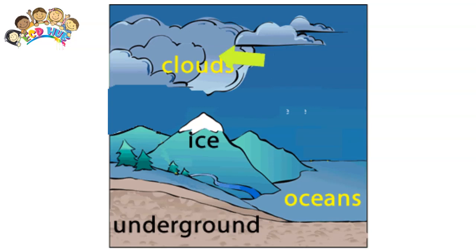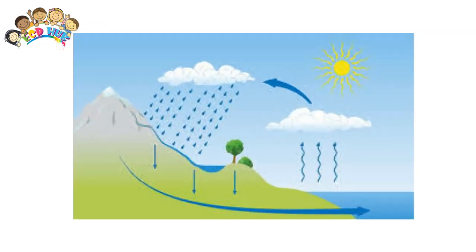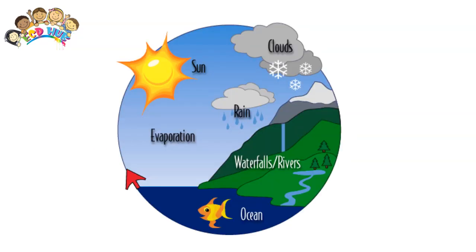Plants take up water from the ground through their roots. They then breathe the moisture out of their leaves into the air. Evaporation accounts for about 90% of the water in the air, with transpiration accounting for most of the other 10%.